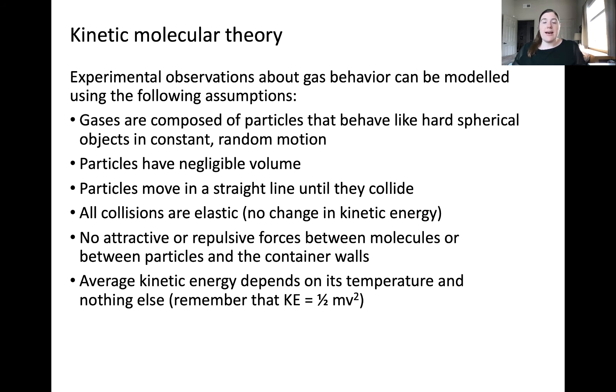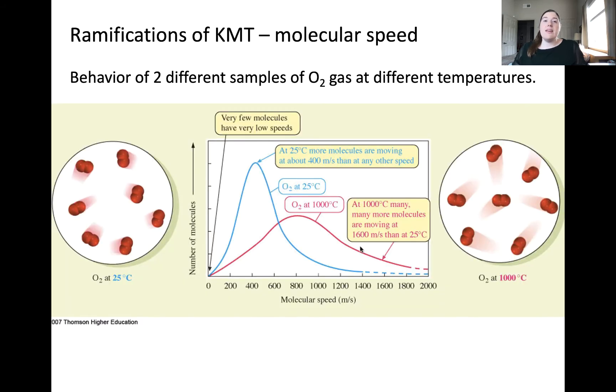All of these assumptions have important implications regarding the molecular speed of an ideal gas sample, which is also referred to as molecular velocity. Here is a plot of the number of molecules on the y-axis against molecular speed in meters per second on the x-axis. The only difference between the two gas samples represented by the two different curves on this plot is that the gas samples have different temperatures.